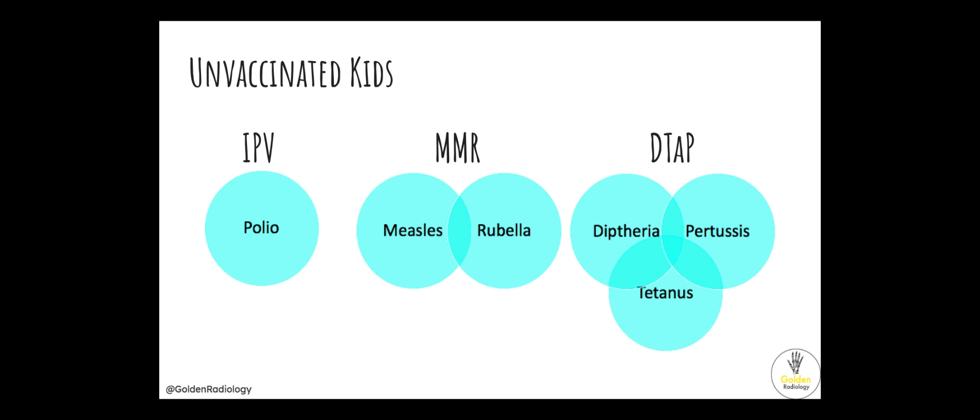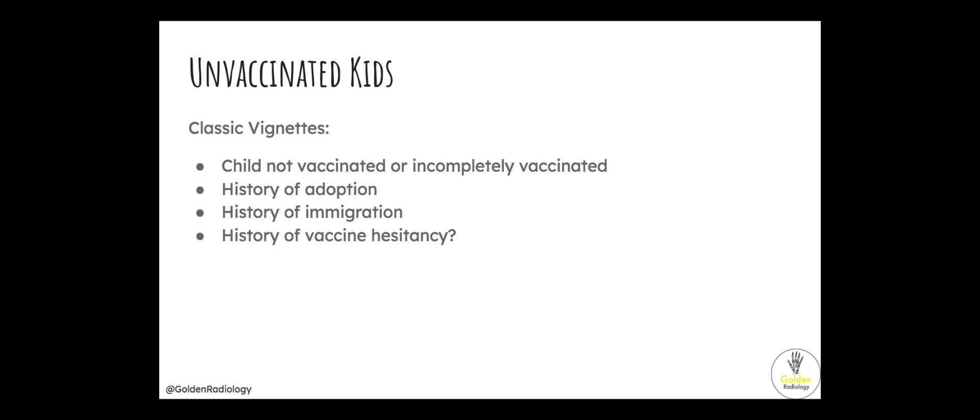Speaking of H. flu and unvaccinated kids, let's cross-train. When a question gives you a history of non-vaccination, think about these six diseases in addition to those caused by Haemophilus influenzae type B: polio, measles, rubella, diphtheria, pertussis, and tetanus. The question may say the kid is unvaccinated, mention adoption, immigration from elsewhere, or that vaccination status is unknown. In the current climate, vaccine hesitancy may also come up.